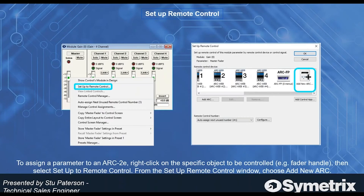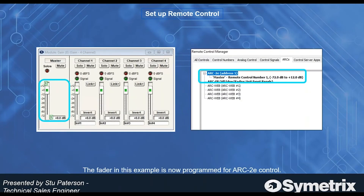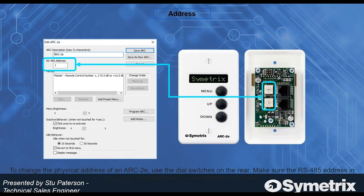Setting up the remote control is exactly the same way you would set up your Arc 3. You right-click on your parameter and select the Arc 2e as your device. Once selected, it appears in the Remote Control Manager as an Arc 2e. By default the address is one — you can change the description much like you can with the Arc 3, and you can change the address, though the address is changed differently in the Arc 2e than the Arc 3.